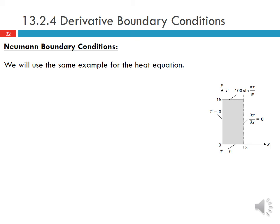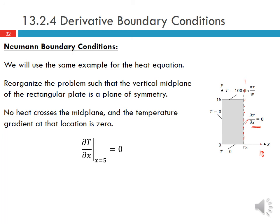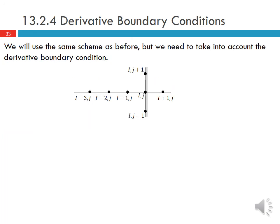Another thing to consider is what happens when we have derivative boundary conditions. In the previous example we had Dirichlet boundary conditions where the value of the function was specified on the domain. Here we solve the same example using Neumann boundary conditions. We reorganize the problem such that the vertical mid-plane of the rectangular plate is a plane of symmetry — cutting the domain in half — and instead of specifying the temperature value at that edge, we specify that the derivative of temperature in the x direction equals zero. So no heat crosses the mid-plane: partial T/partial x at x = 5 equals zero.